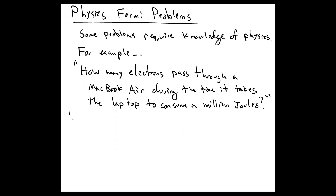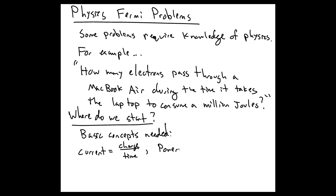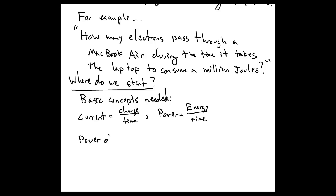So how do we start a problem like this? Well, first we do need to recall some basic concepts and equations from introductory physics. So in particular, we need to recall that current is charge per time. Power is energy per time. And the power dissipated in a circuit by some resistive element is the current times the voltage.